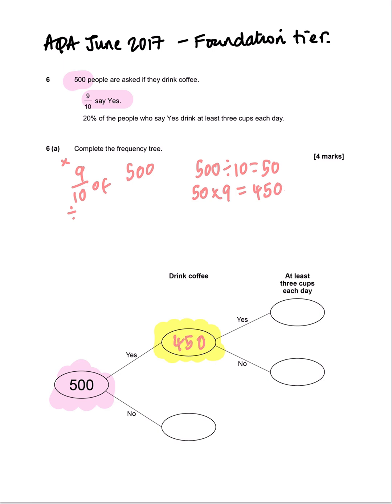I'm going to put 450 in the yes area of the frequency tree. Now, because we are aiming to complete the frequency tree, I can find this box of the frequency tree now.